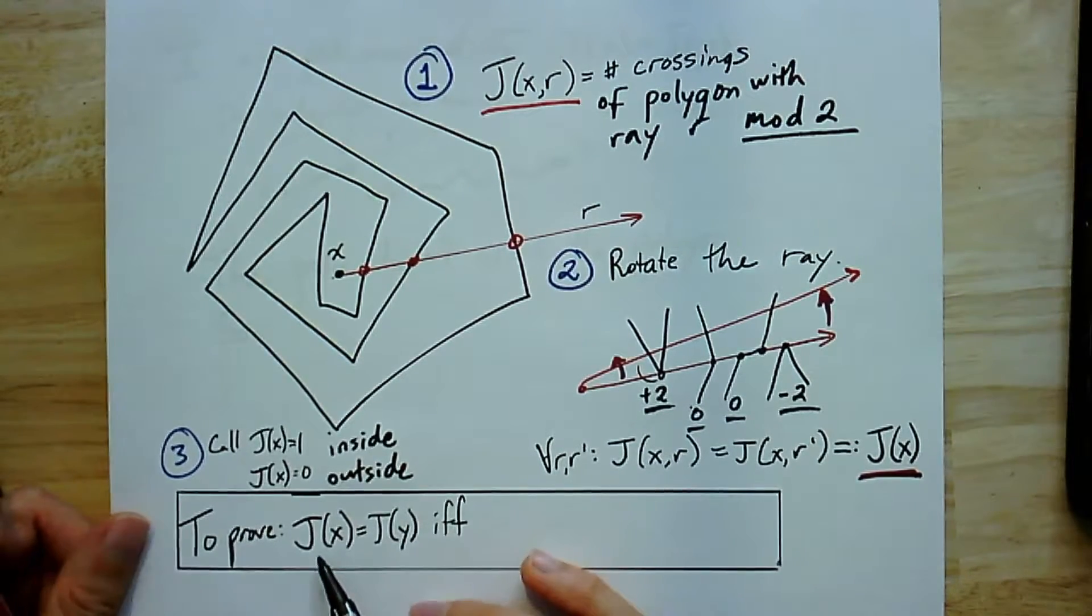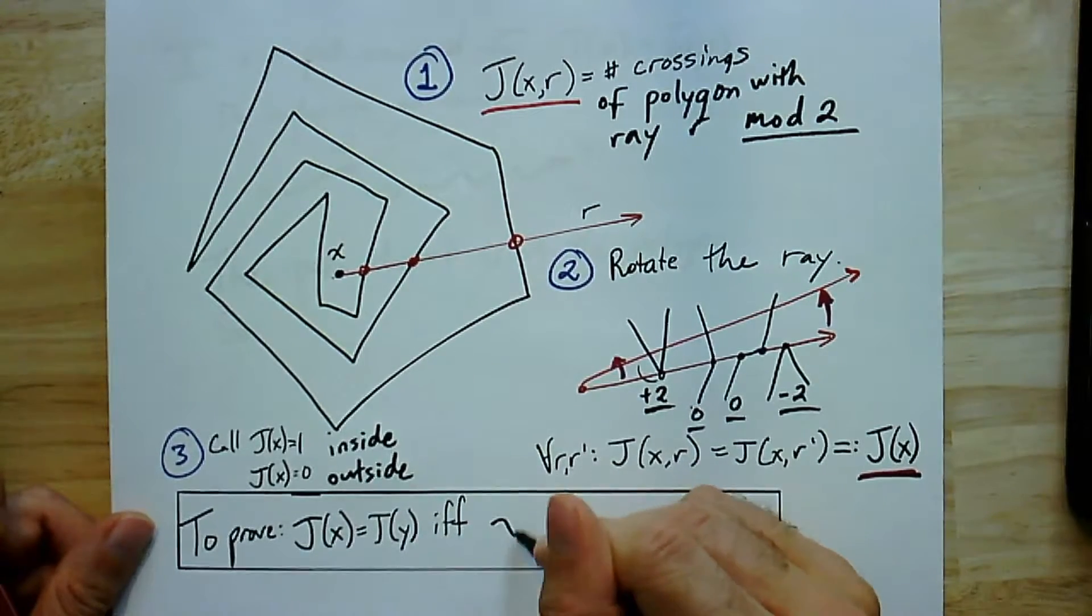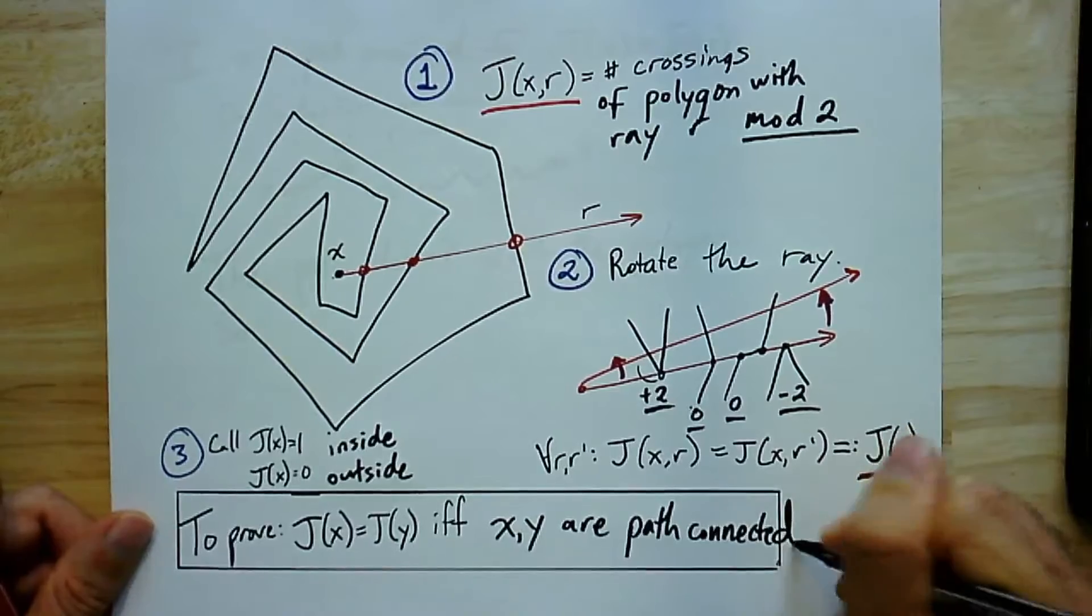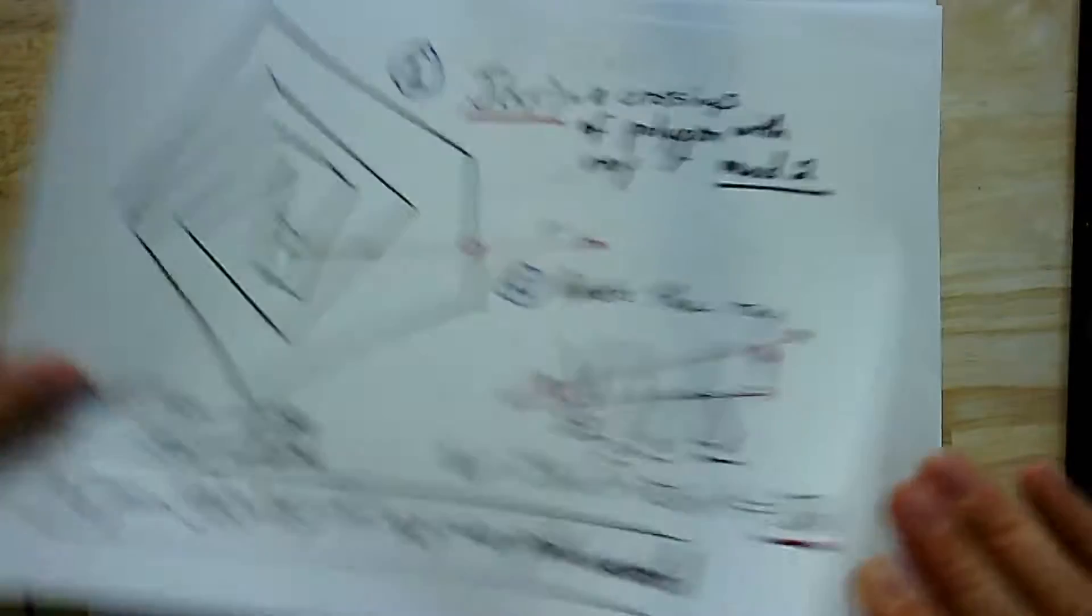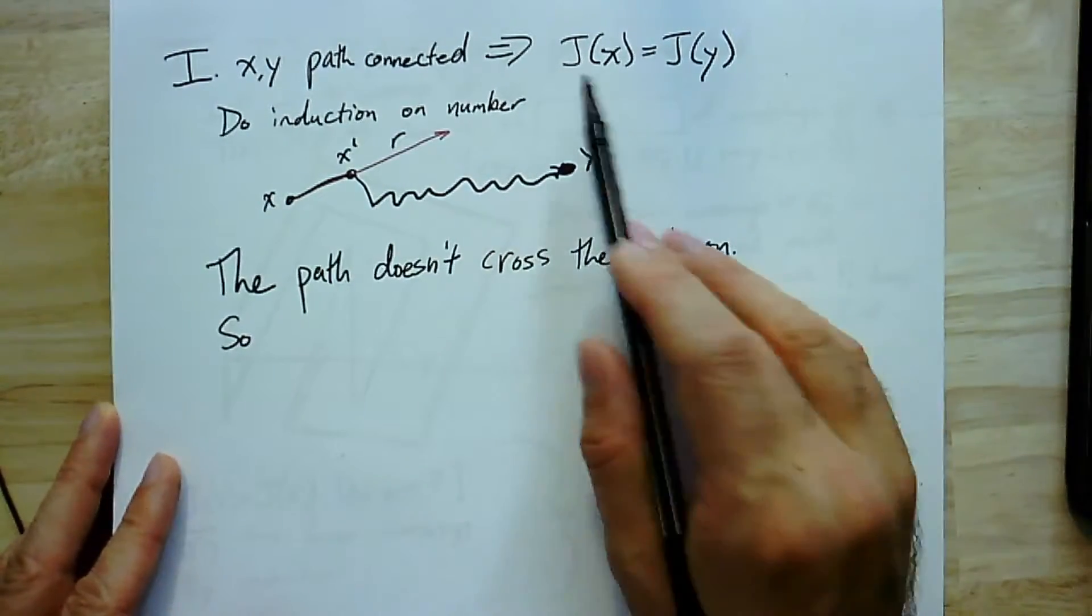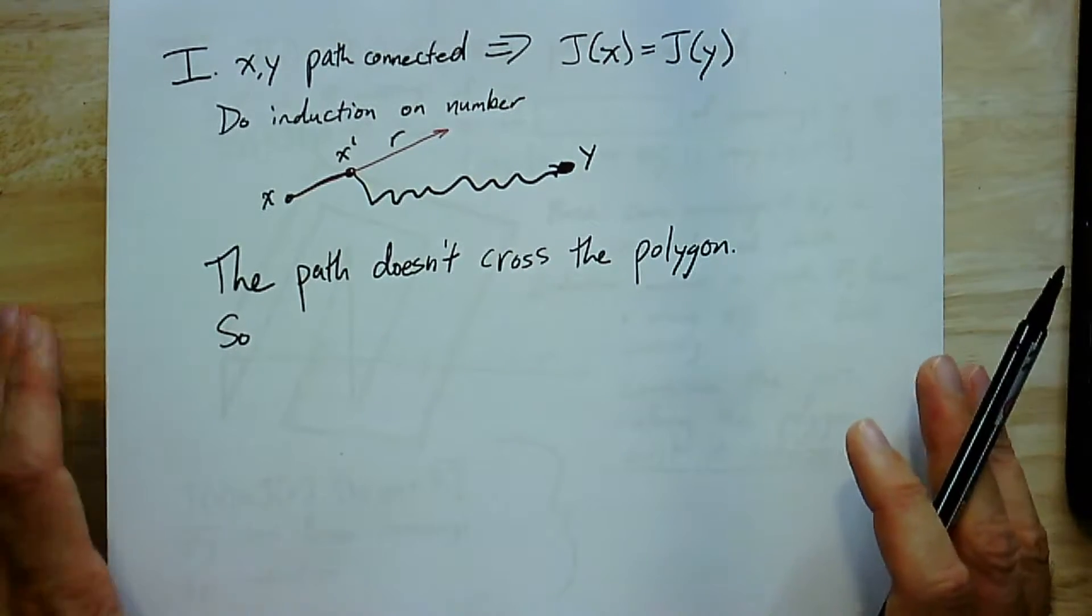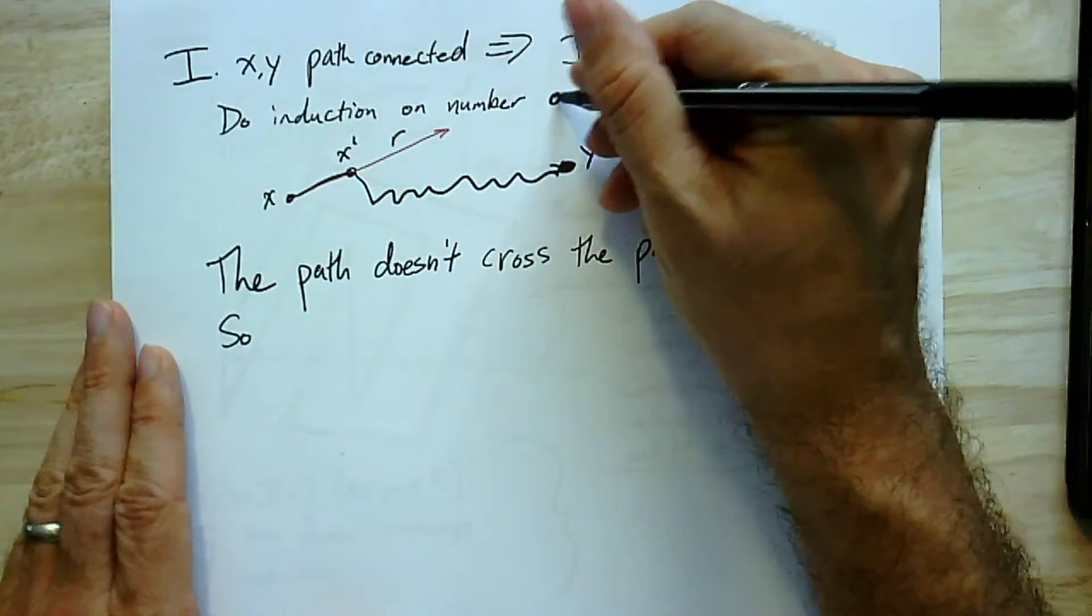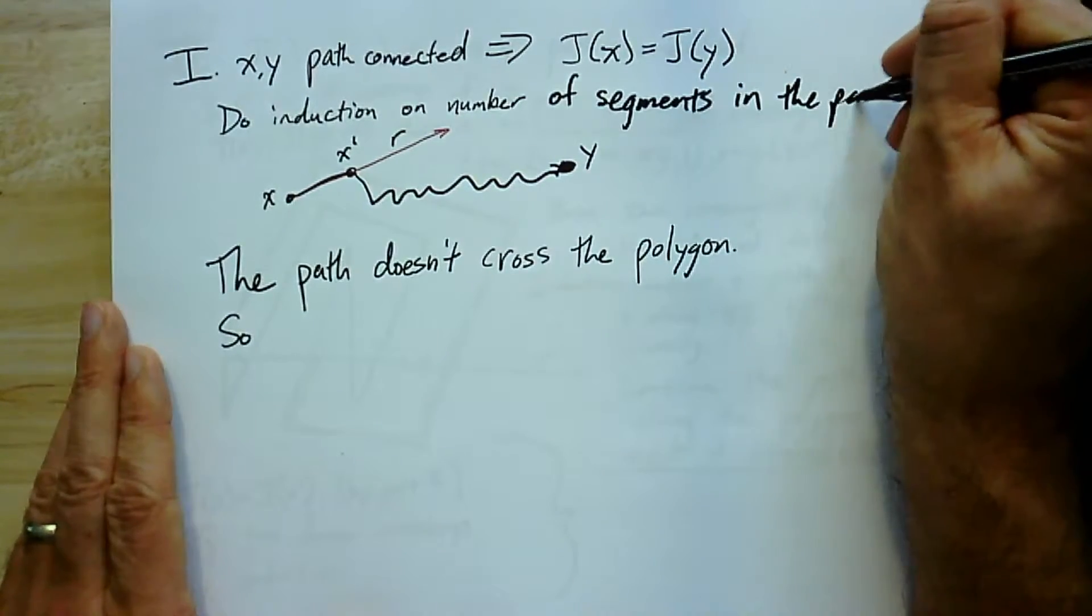And now what we want to prove is that j(x) equals j(y), that is, they're on the same side, if and only if x and y are path connected. So first step, because there's two directions, it's an if and only if statement. First we're going to show that if they're actually path connected, then they have the same value. j(x) is going to be equal to j(y). And if they're path connected, then there is a path, and again, all the paths we're talking about here are polygonal paths. So we can do induction on the number of segments in the path.